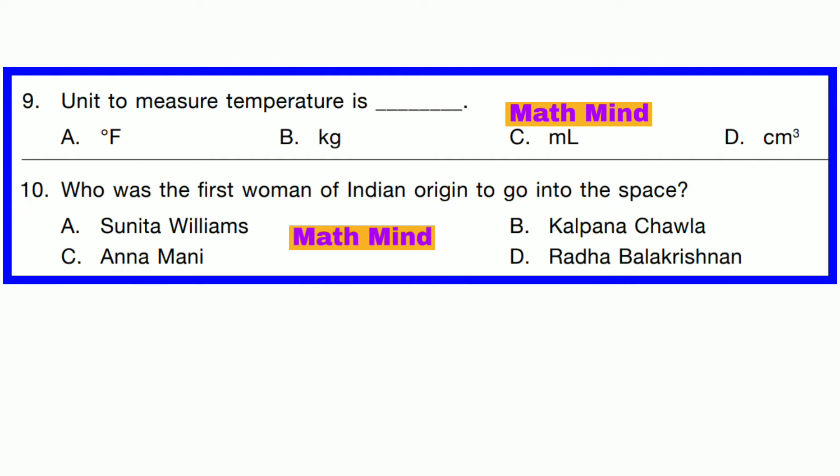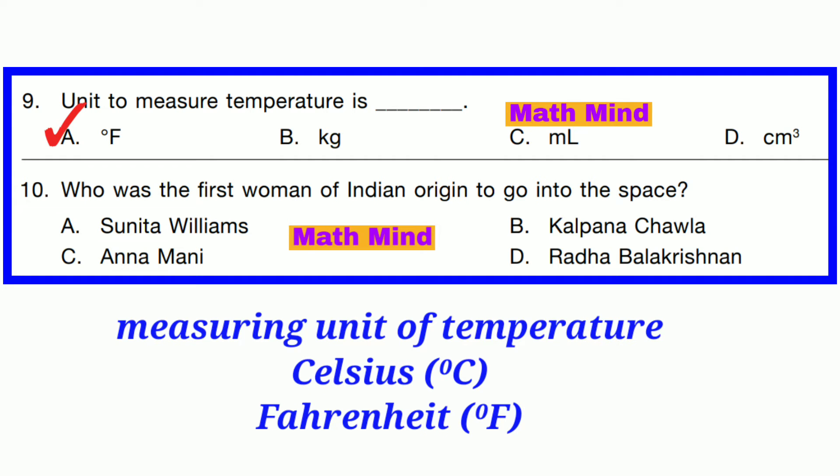Question number 9. You need to measure temperature. Option A is correct: Fahrenheit. Option B is kilogram — it measures weight. Option C is milliliter — it measures liquid volume. Option D is cubic centimeter — it also measures volume.